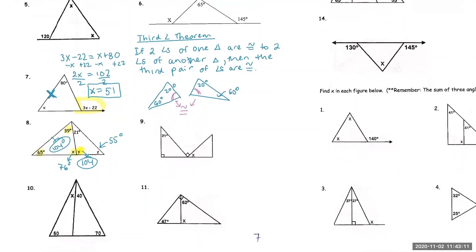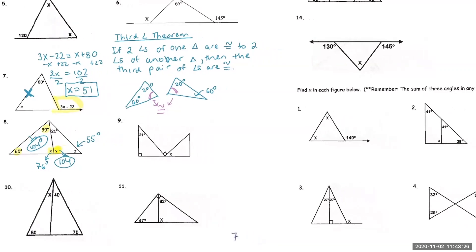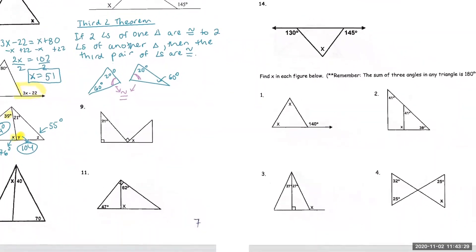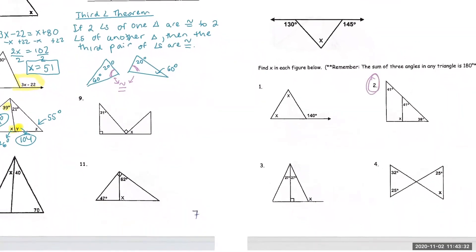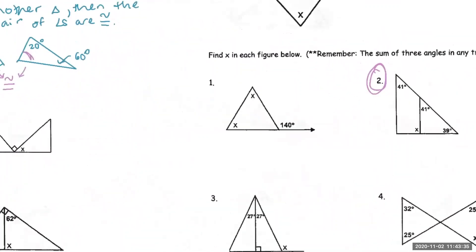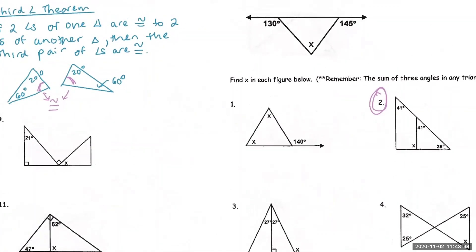Anytime you guys have trouble printing a packet, just jot down whatever notes you guys can. For the homework assignment, you can do the problems on a separate sheet of paper, that's okay too. As the last problem, I wanted to do one that was a little bit more difficult — number two on the right-hand side. If you know that these angles are congruent, what do you know about these two lines? They must be parallel — converse of CA.